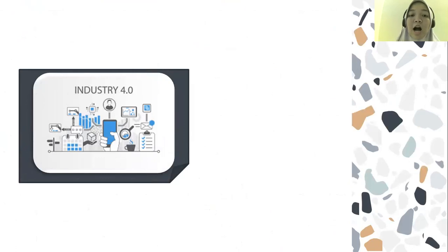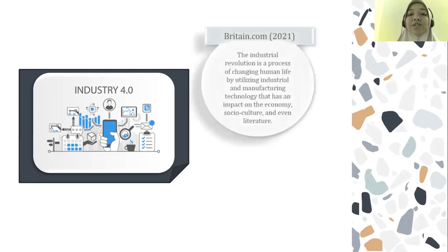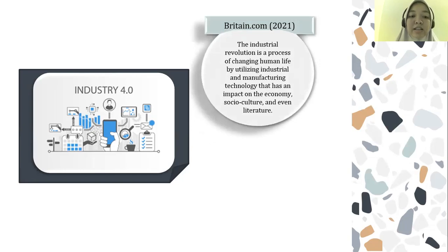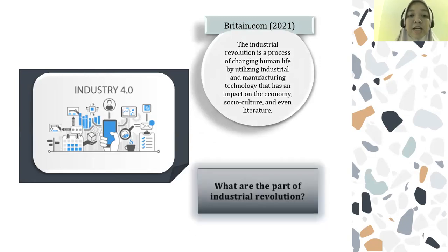Before I start, I want to ask: have you ever heard of the Industrial Revolution 4.0? For those involved in the world of technology or actively following the news, of course they have. According to Britannica, the Industrial Revolution is a process of changing human lives by utilizing industrial and manufacturing technology that has an impact on the economy, social culture, and even literature. In short, this industrial revolution has undergone four changes.